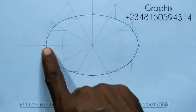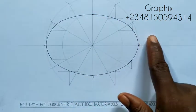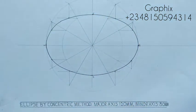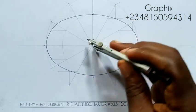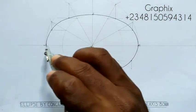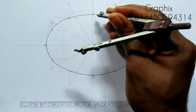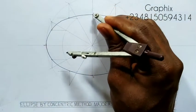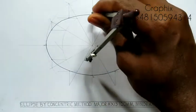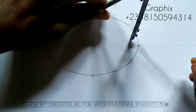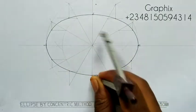In this ellipse concentric method, if I want to draw a tangent to this ellipse here, what I will do is the same procedure. I will place my compass at the center to point A here, and I'll take it to point C at the minor circle, and I'm going to draw my arc this way, and I'll draw my arc this way, then I'll place it here where they intersect.